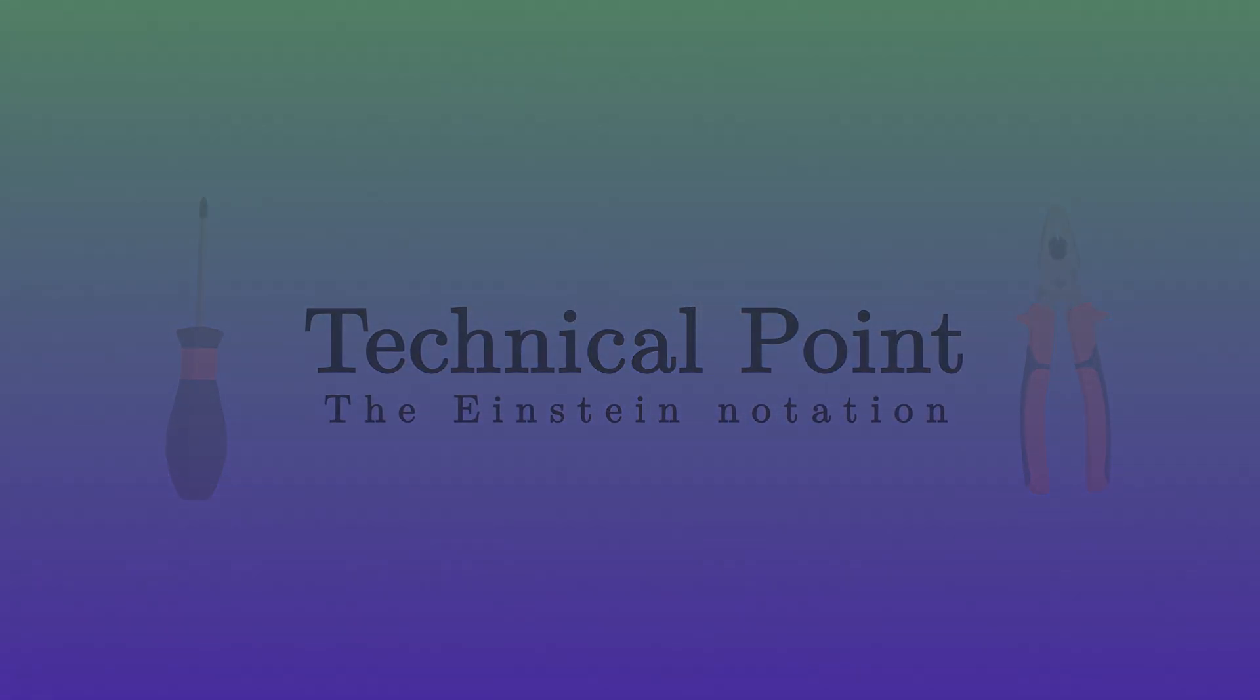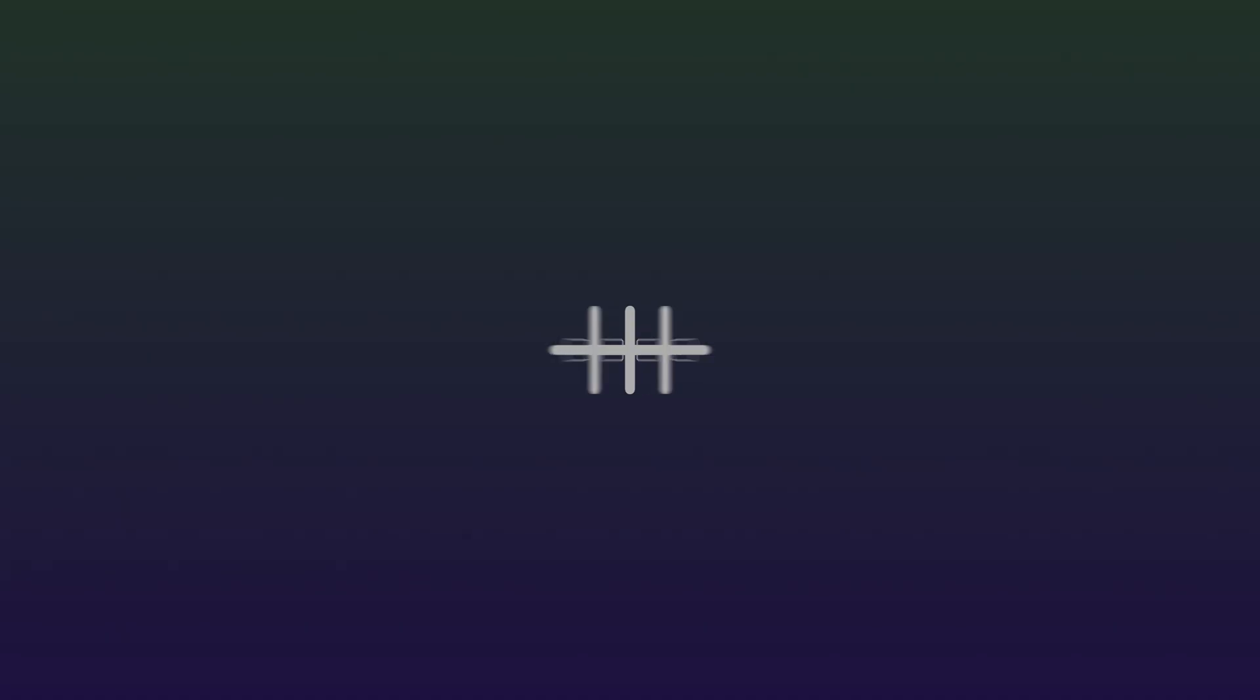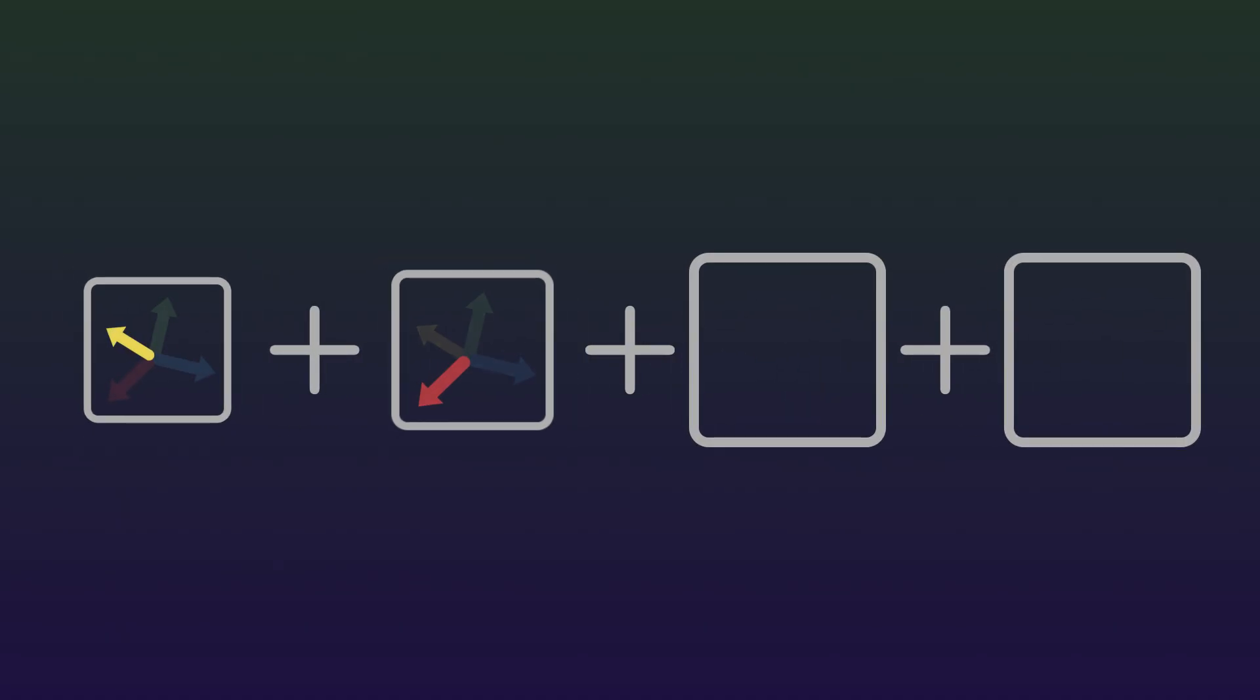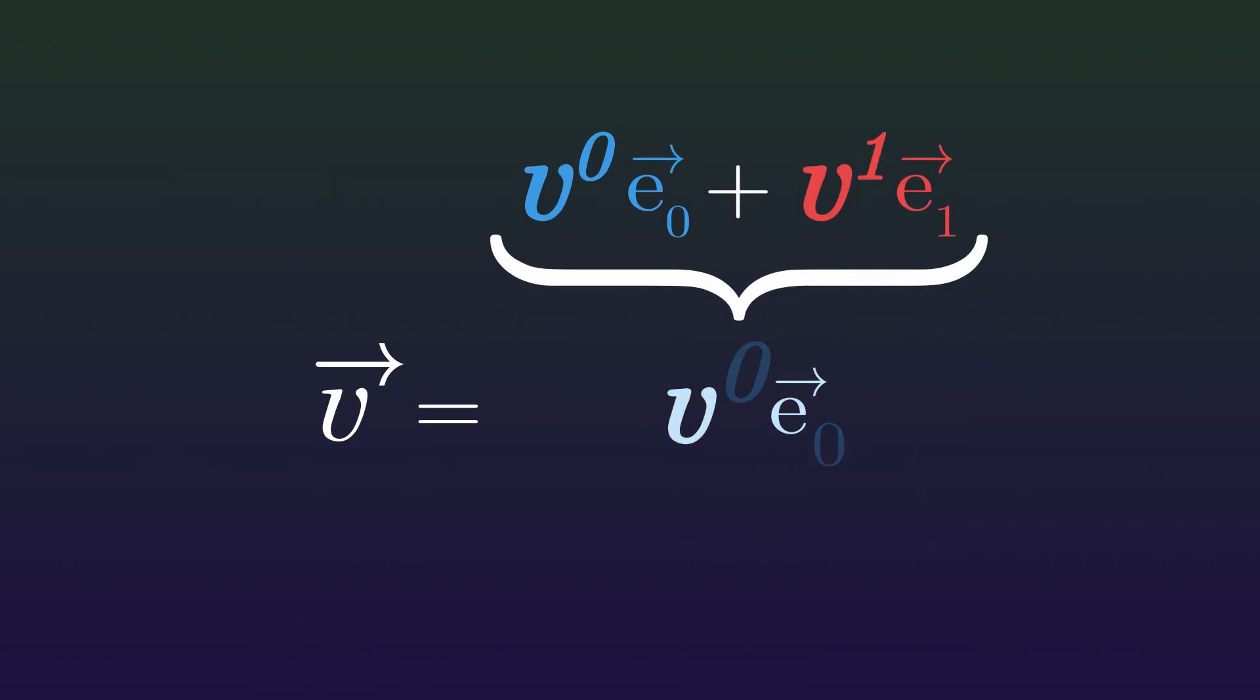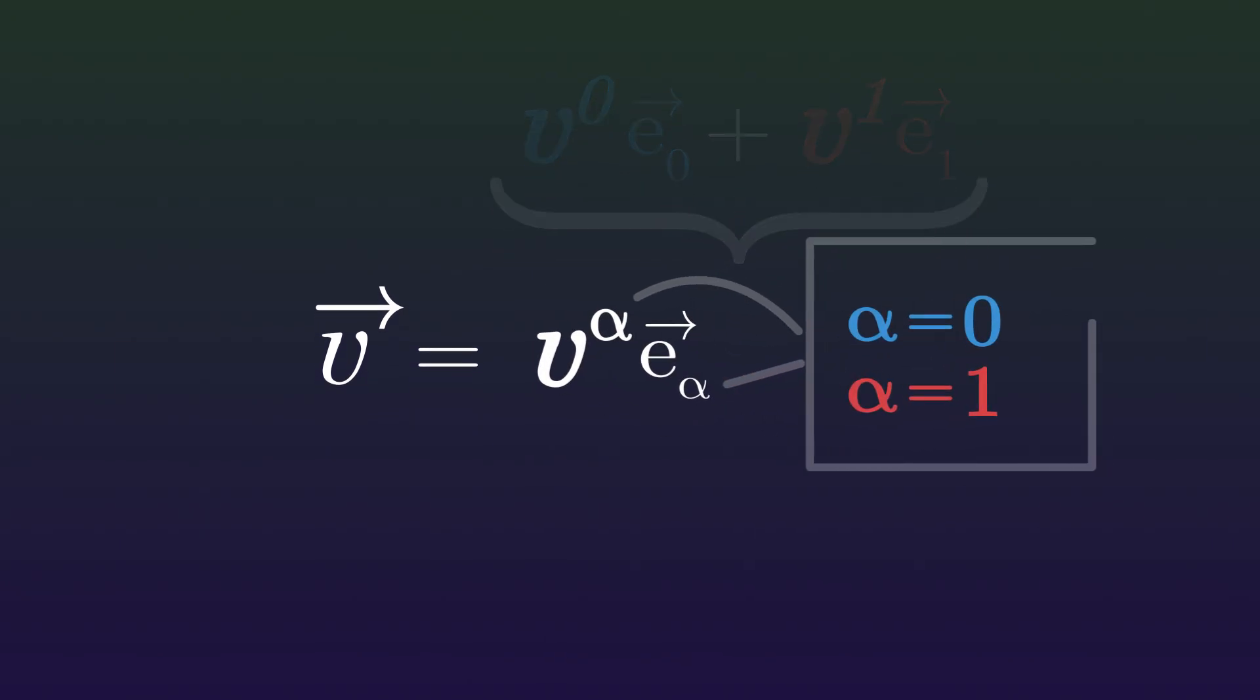In mathematical expressions in general relativity, it often happens that a same term is summed over all coordinates one by one. For example, in the previous equation, we wrote the vector as the sum of each component multiplied by each basis vector. To compactify this expression, we can summarize the whole sum by writing only one of these terms and replacing the numbers which designate the coordinates by a Greek letter. For example, alpha, which goes through each coordinate one by one.